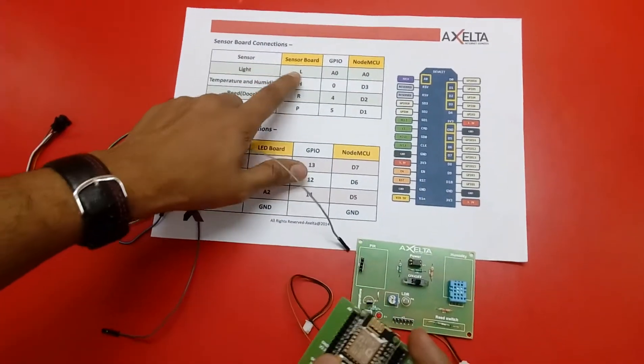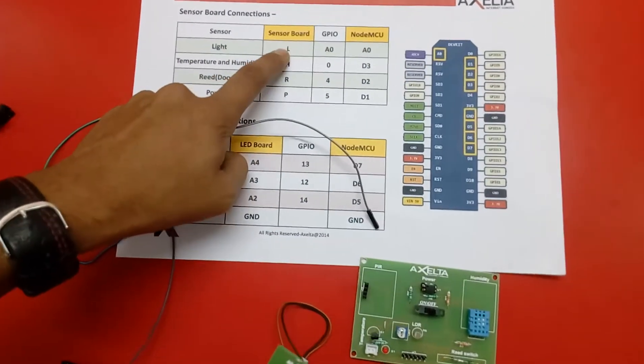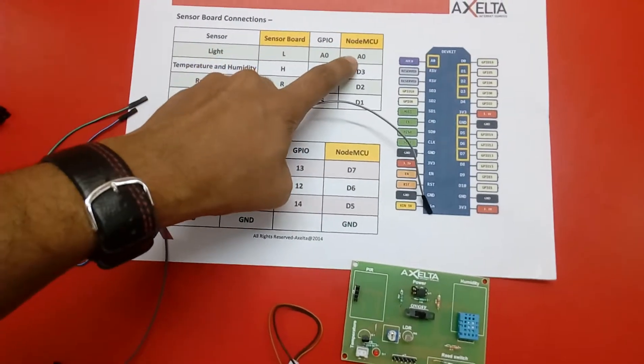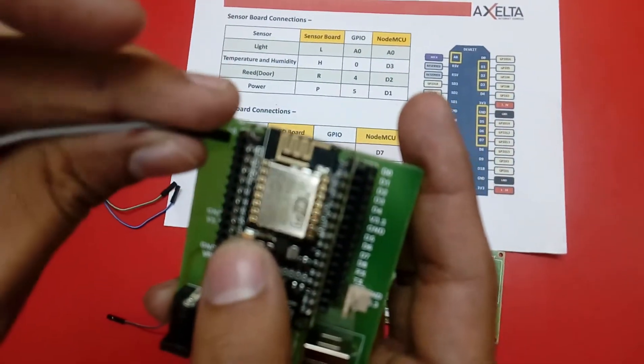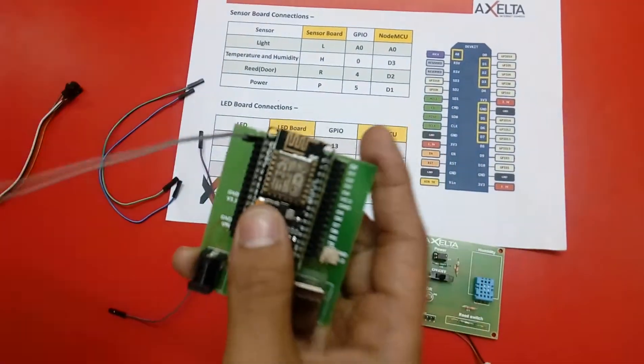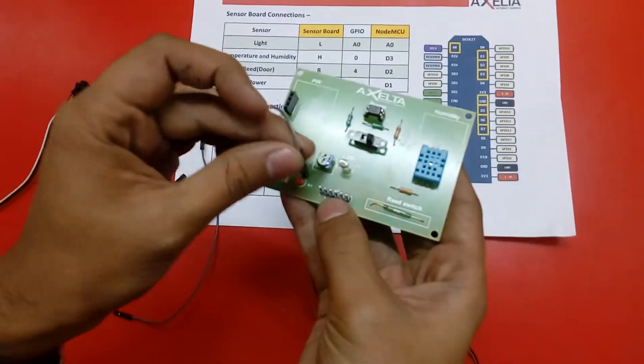As per table, first I will show you how to connect L to A0. L is a notation on sensor board and on NodeMCU it is A0. A0 is over here, so I am connecting 1 female end at this point. A0 is going to L.